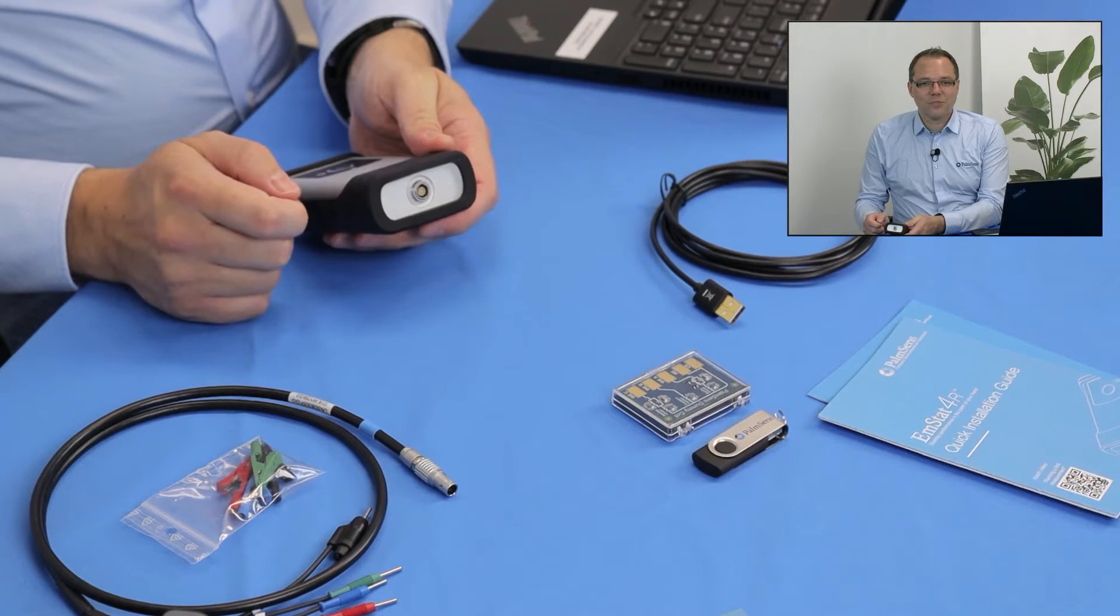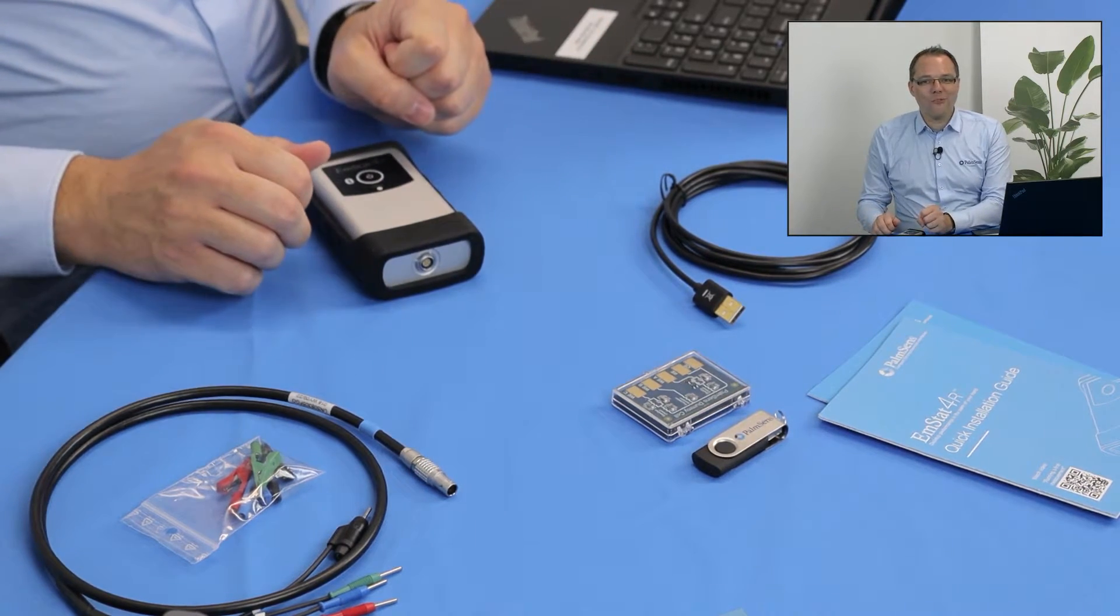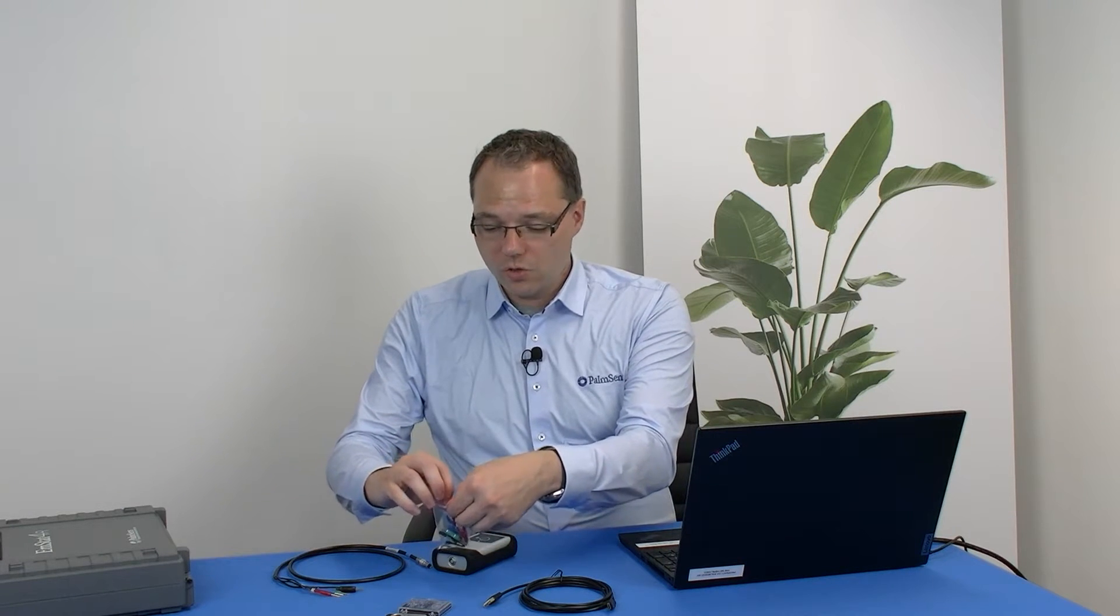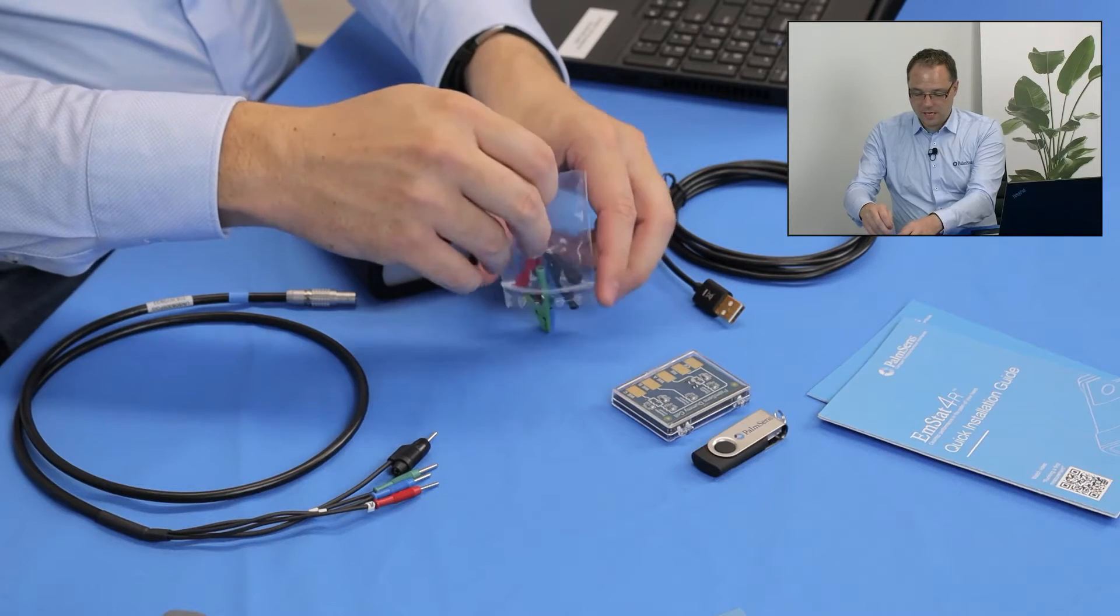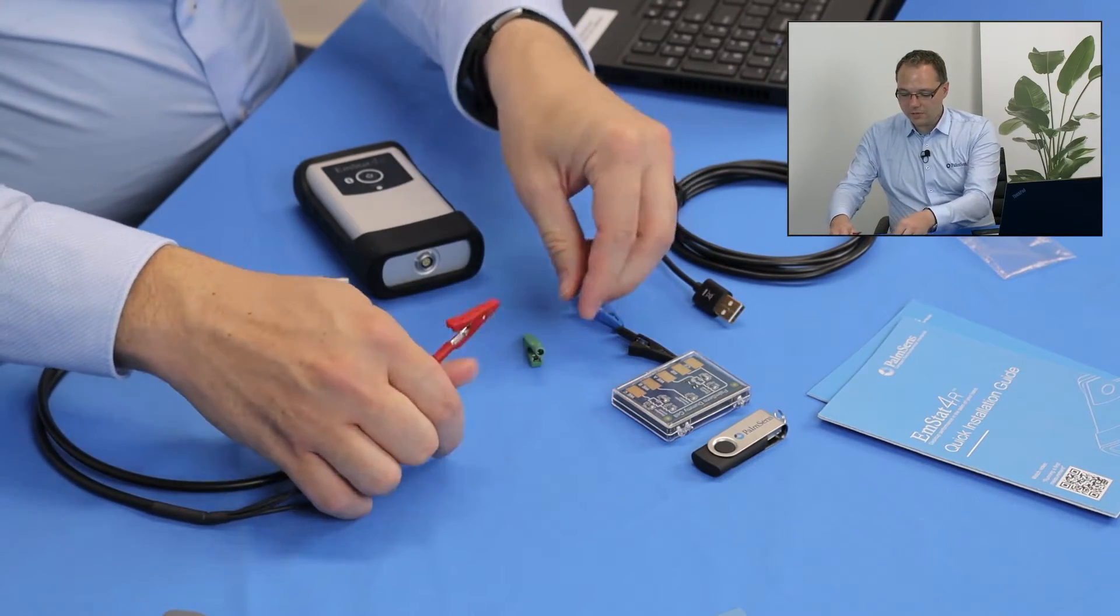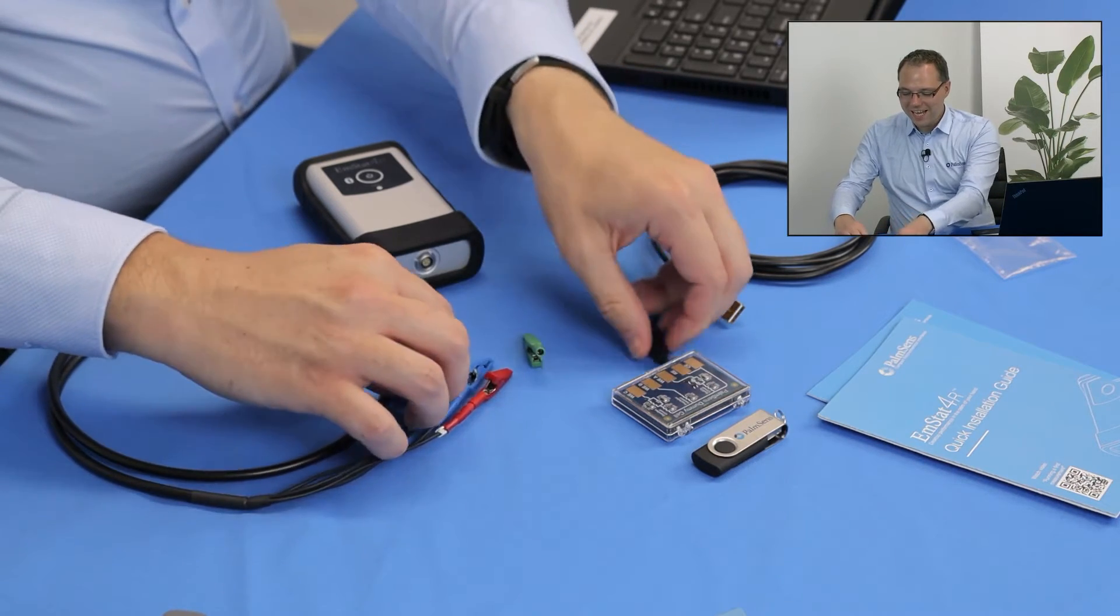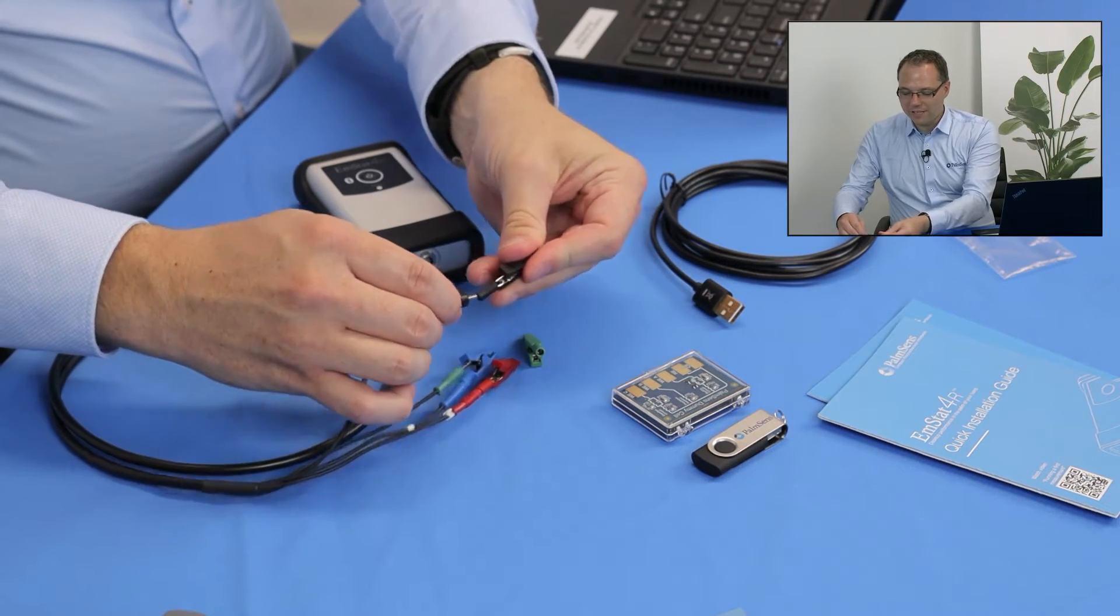That is an alternative, as I said, but today we're going to use the connection for the cable. So I think it's time that we set up our first experiment. I start by connecting the crocodile clips to the banana plugs. I connect the red clip for the working electrode, the blue clip for the reference electrode and the black clip for the counter electrode.